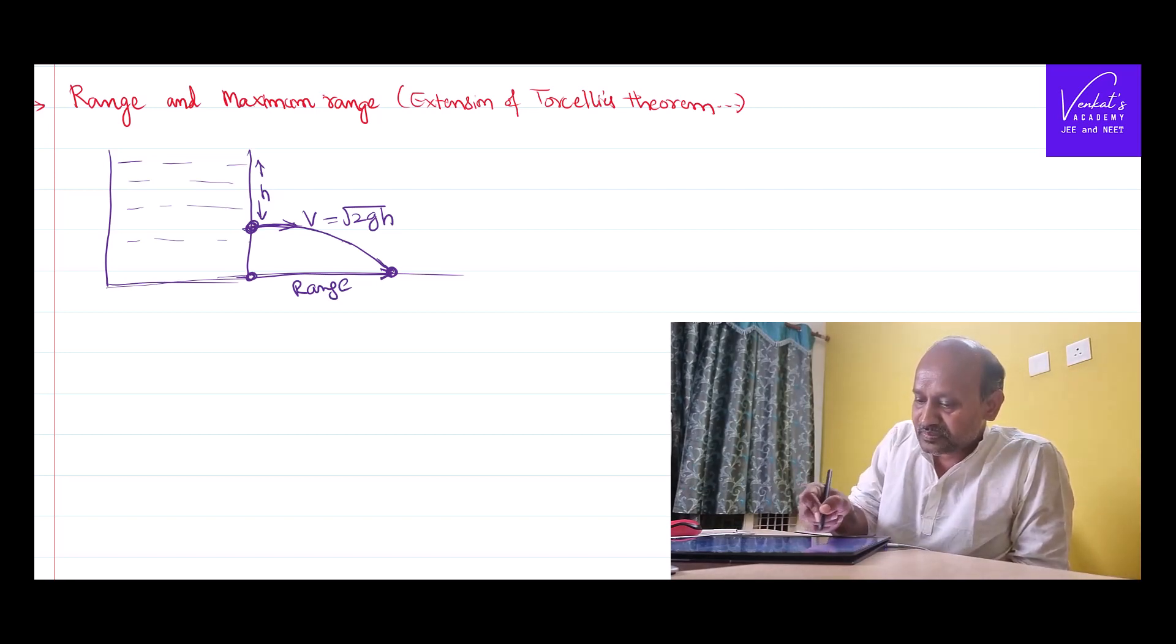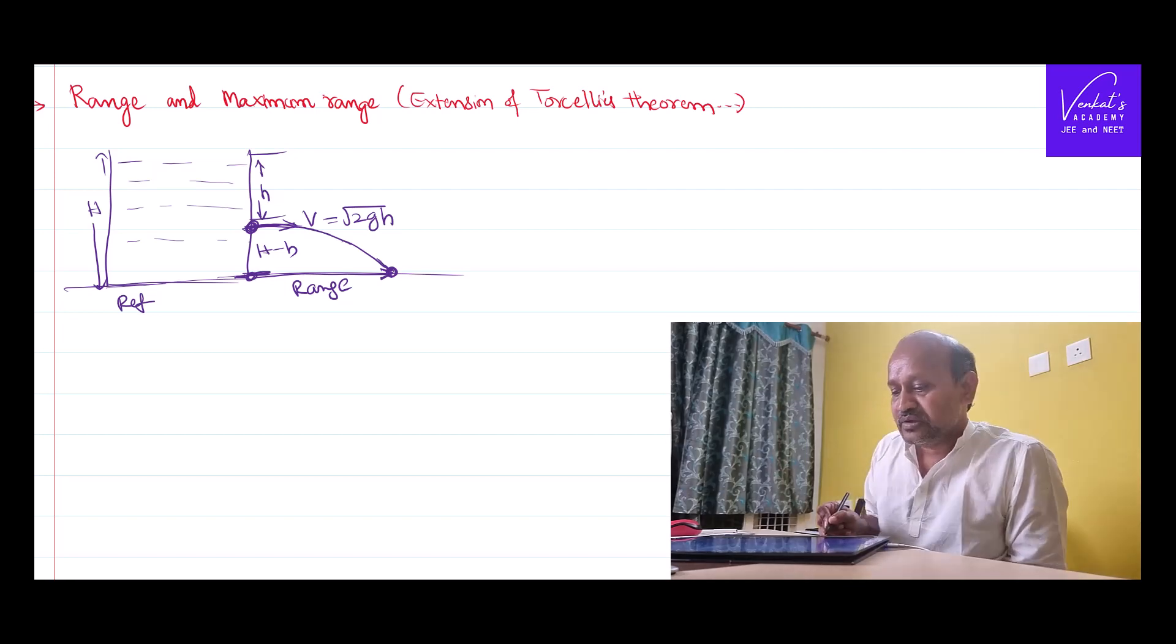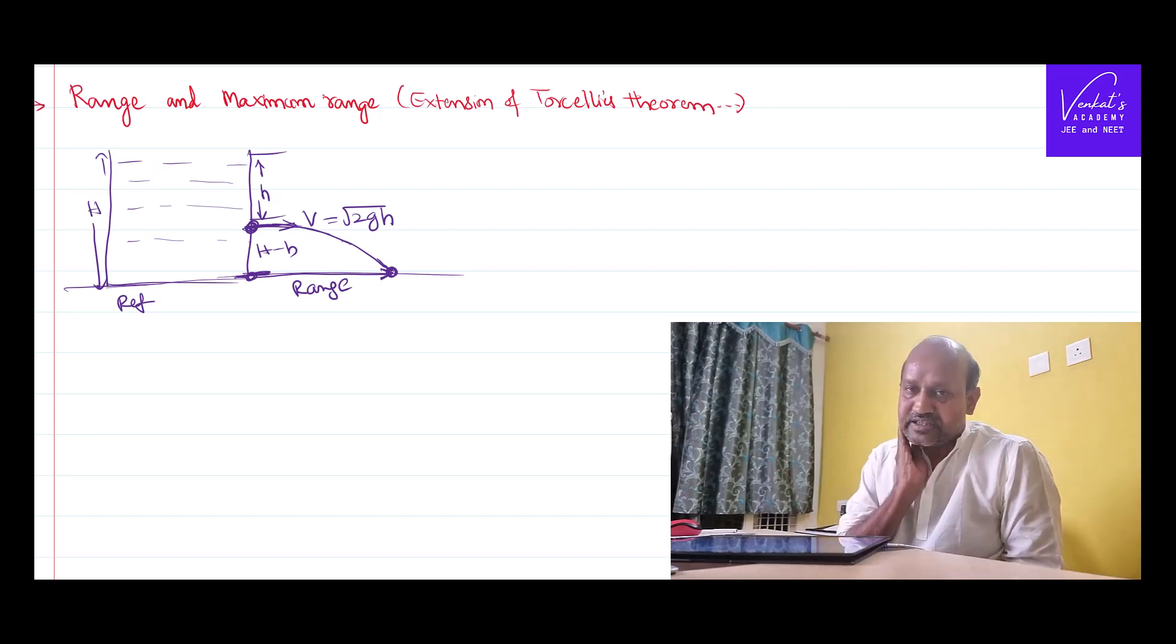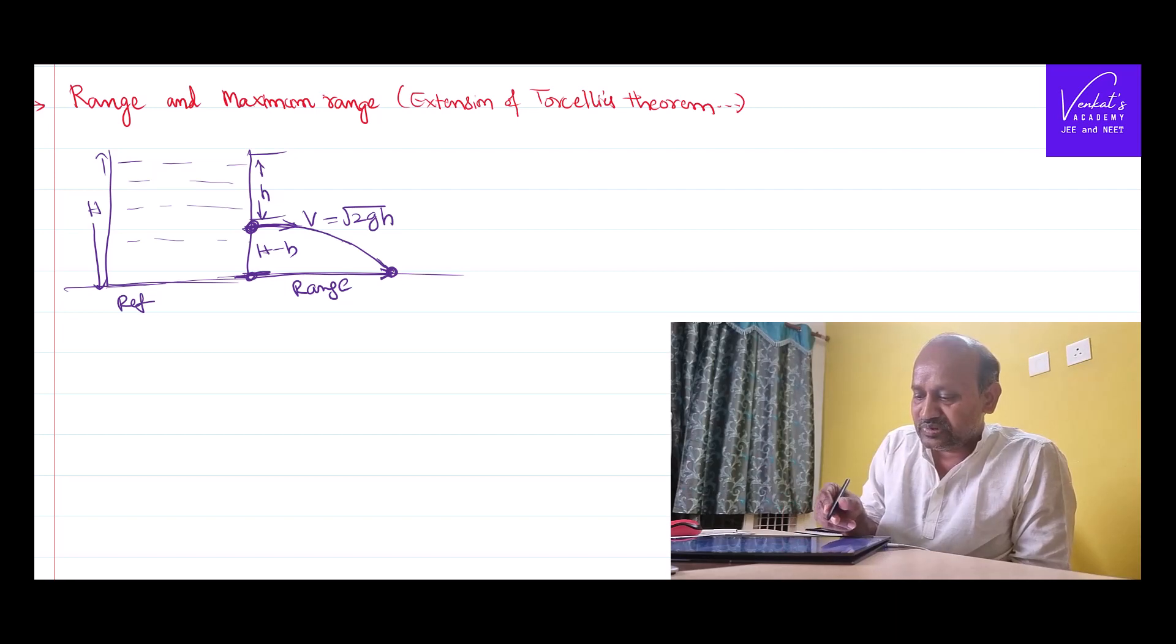As we have assumed the total height as capital H from this reference point, from this base, the height of the opening will be H minus h. So the liquid drop is leaking out from a height H minus h from the ground, and it's like a freely falling body, it takes some time to reach the ground.